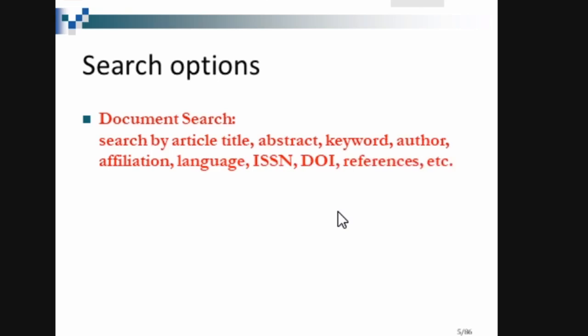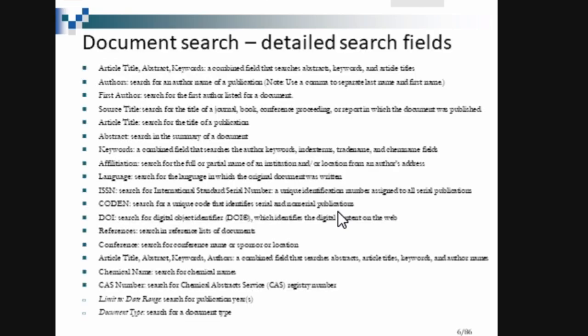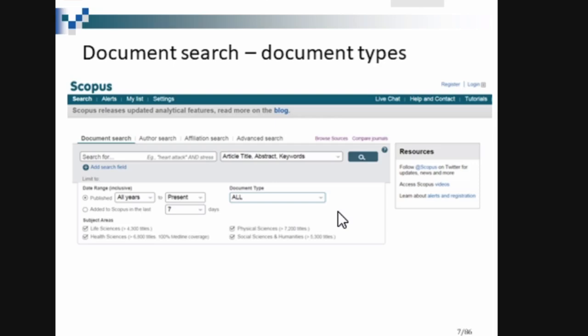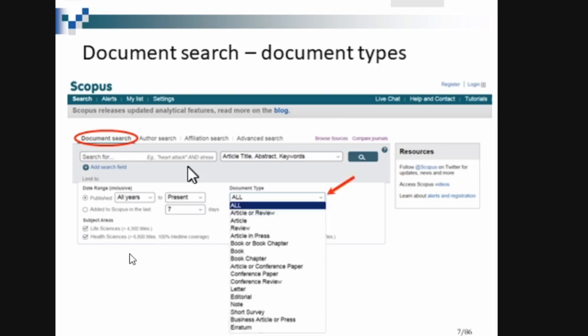Document search allows you to search by the type of document — by title, abstract, keyword, author, and so on. There are different document search fields: author title, first author, source title, abstract keywords, DOI, and more. There are also different kinds of documents available: conference proceedings, conference paper, review paper, research paper, meeting abstracts, and others. You can search according to the type of document you want.